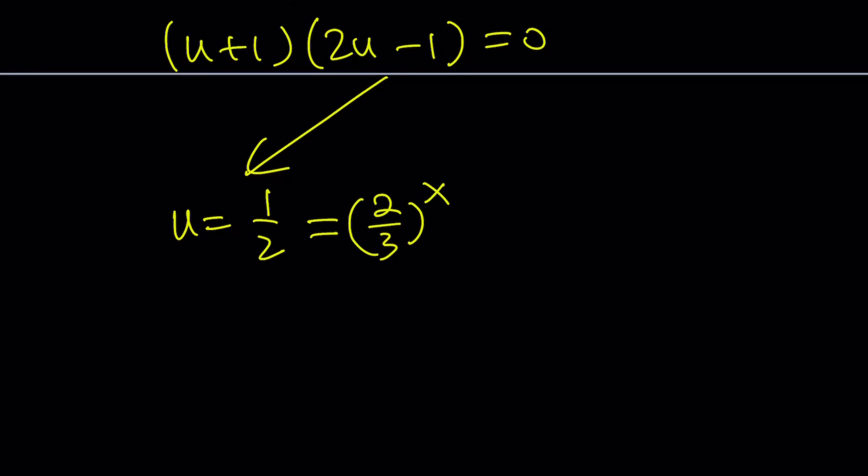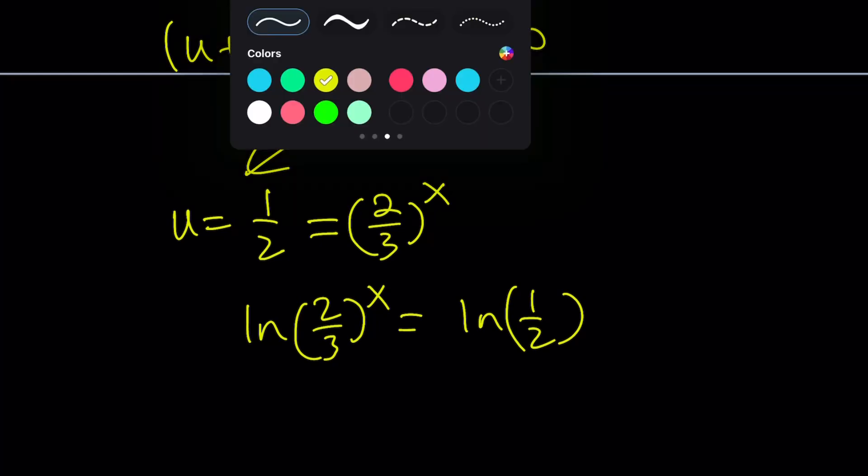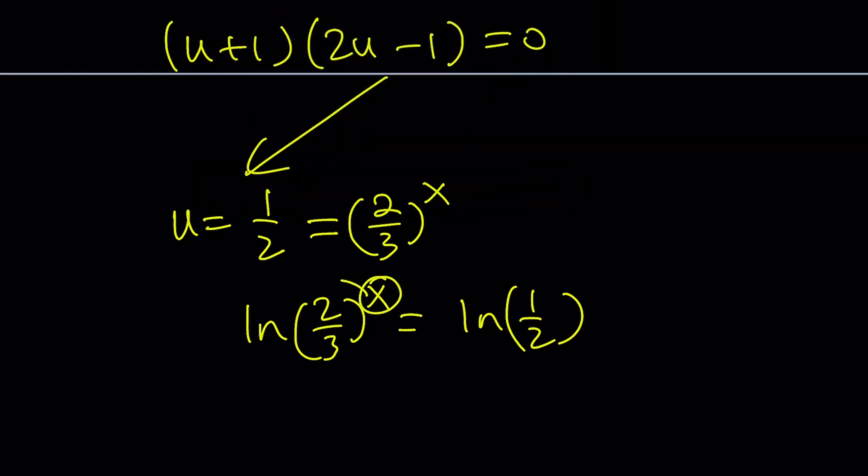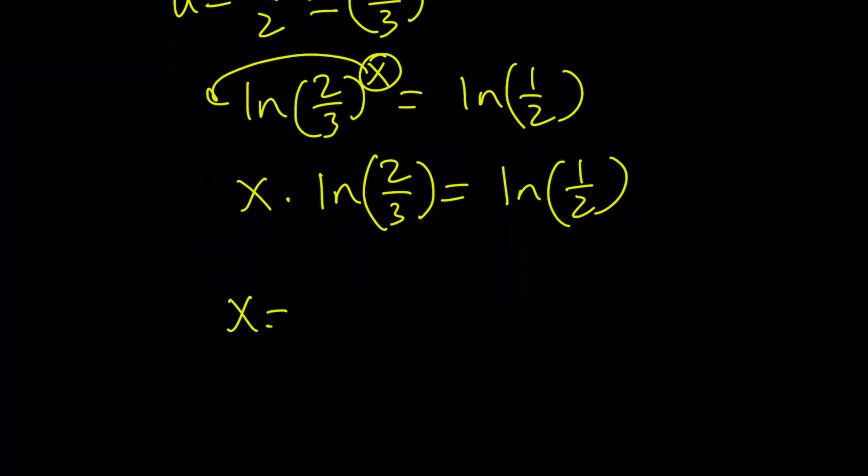Now we can log both sides with natural log. That's my favorite. Then x moves to the front. That's what is good about logging both sides. It's going to give us x·ln(2/3) = ln(1/2). By division, we get x = ln(1/2) / ln(2/3). This is cool.